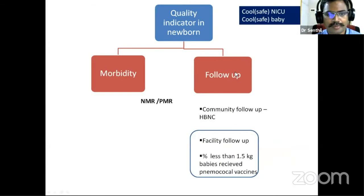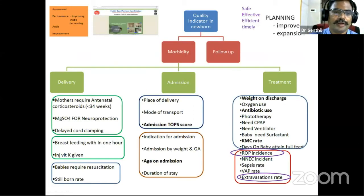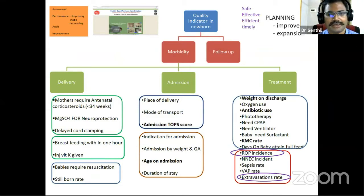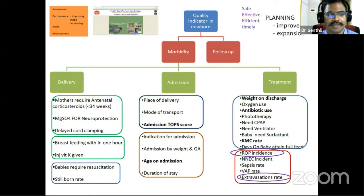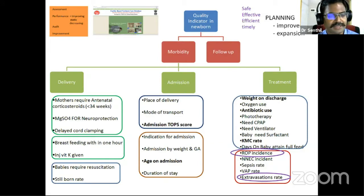When it comes to quality indicators in newborns, there is a database from the national facility-based newborn care database, which is the largest database in India. It has certain quality indicators to ensure the safety, efficacy, and effectiveness of a delivery system. The ultimate aim is improving services and expanding newborn care, and there are two different domains.